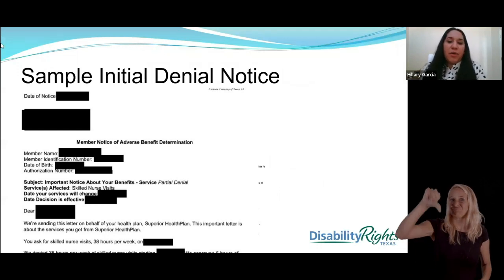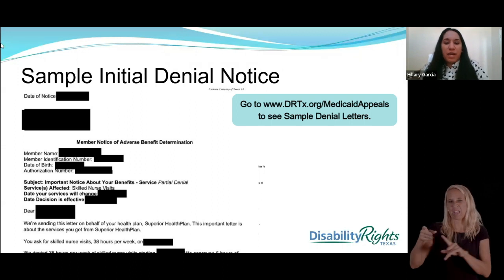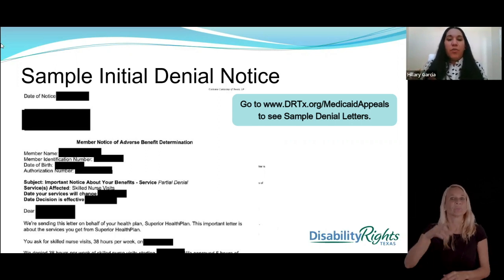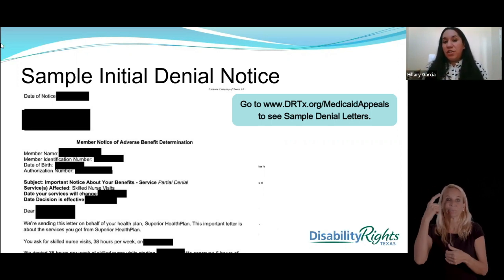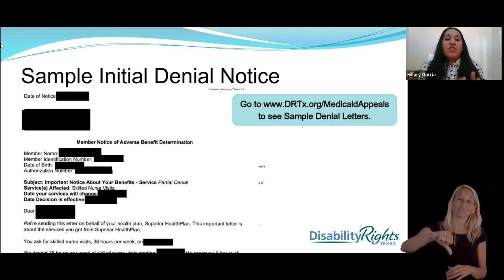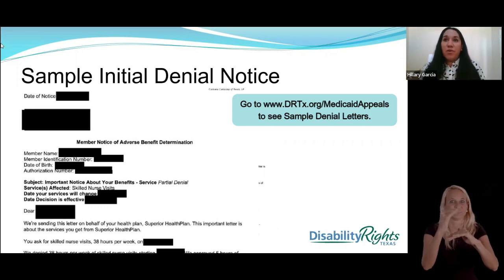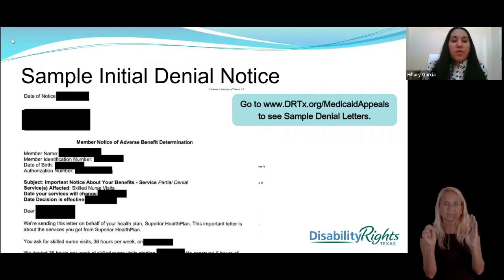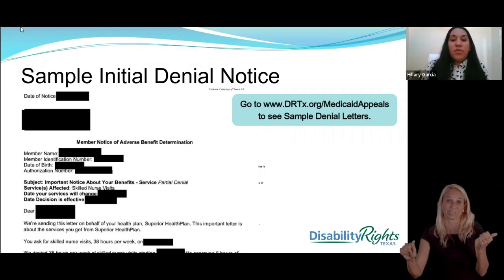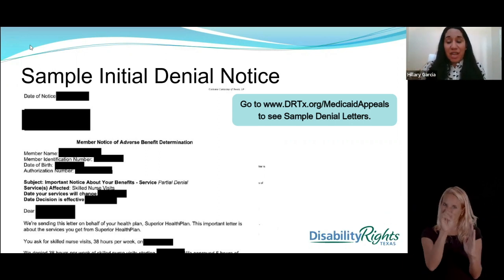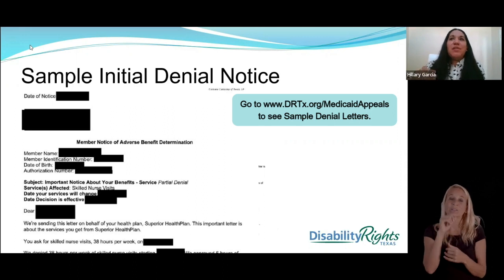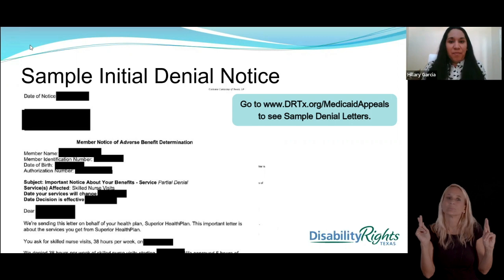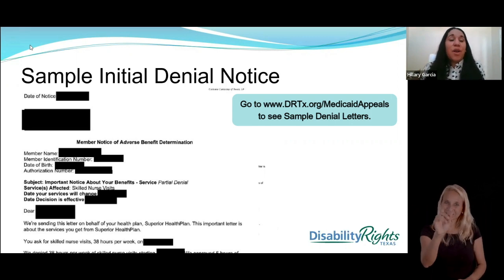We provide a sample denial notice that was provided to one of our clients — with personal information redacted. It is an initial denial notice. The initial denial notice starts the time frame for your appeal and the secondary information you will receive. Things to consider: normally they'll give you the date the decision is effective, which is important to note. It's supposed to be 10 days after the date of the letter — it shouldn't say the decision is effective the very next day, because that would be unlawful. They have to give you 10 days before the action actually takes place.